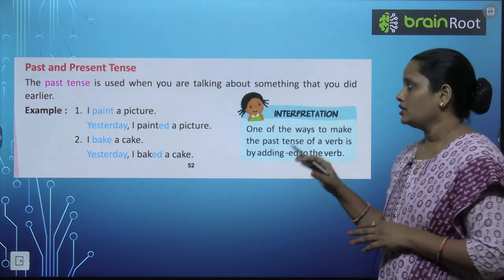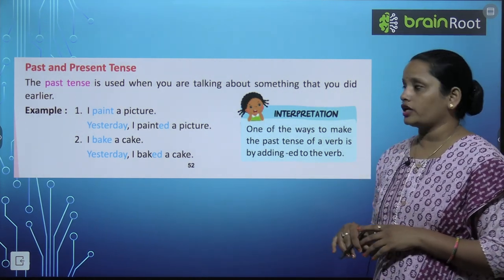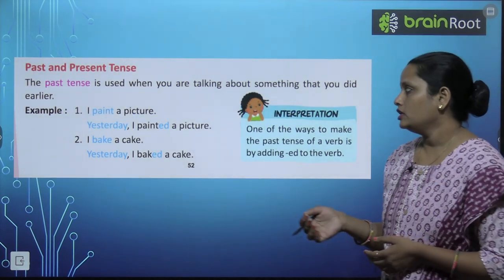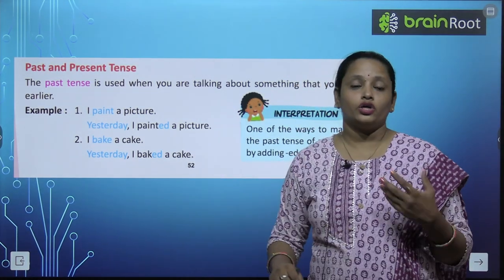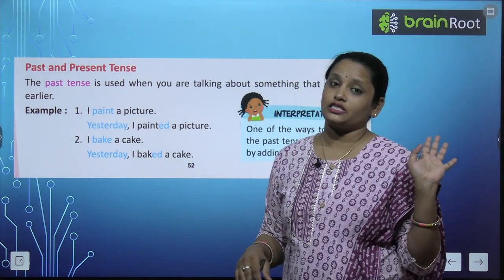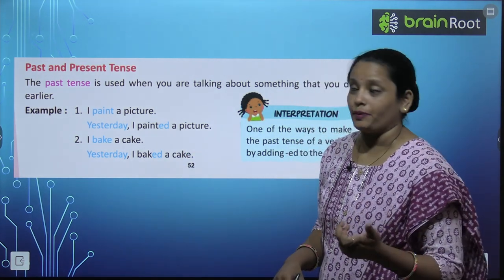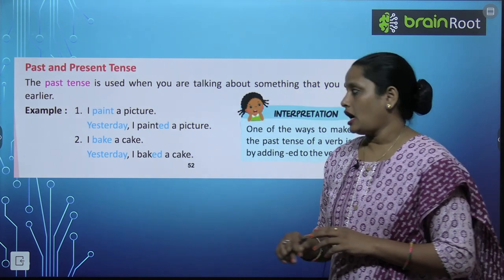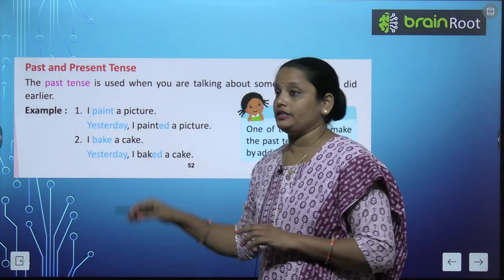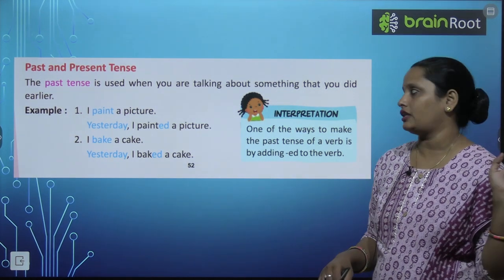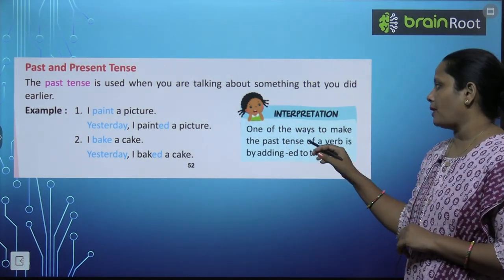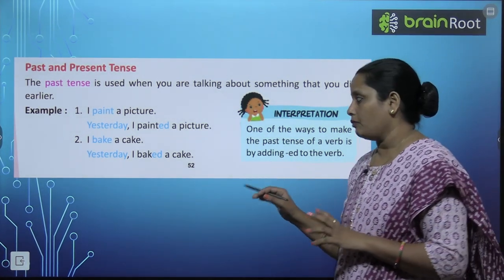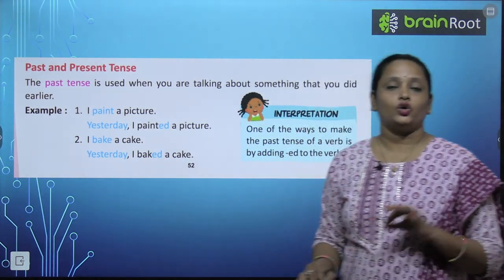Present and past tense. The past tense is used when you are talking about something that you did earlier — jab kisi kaam ki baat karayin jo ho chuka hai. For example, I paint a picture → yesterday I painted a picture. Paint mein 'ed' laga ke painted kar diya. Similarly, I bake a cake → yesterday I baked a cake. One way to make the past tense of a verb is by adding 'ed' to the verb.